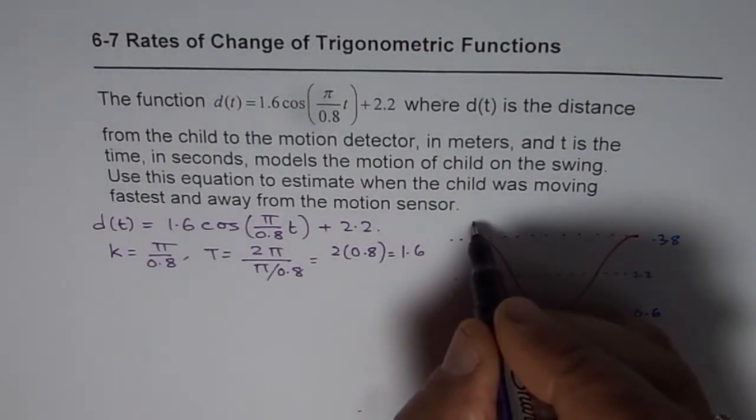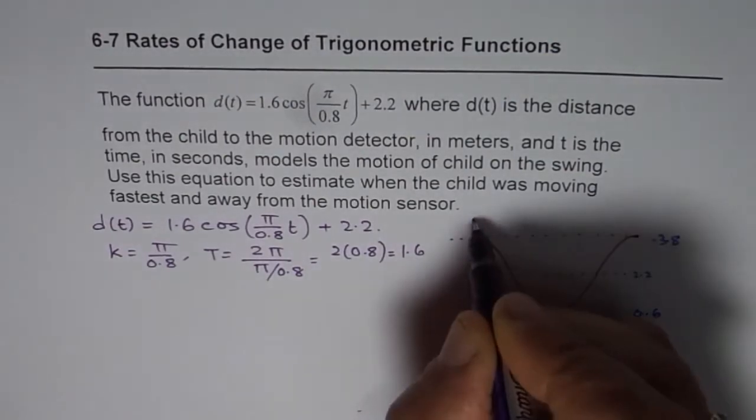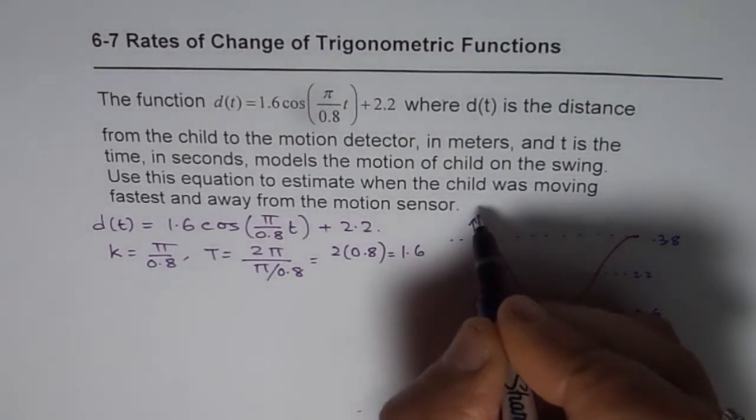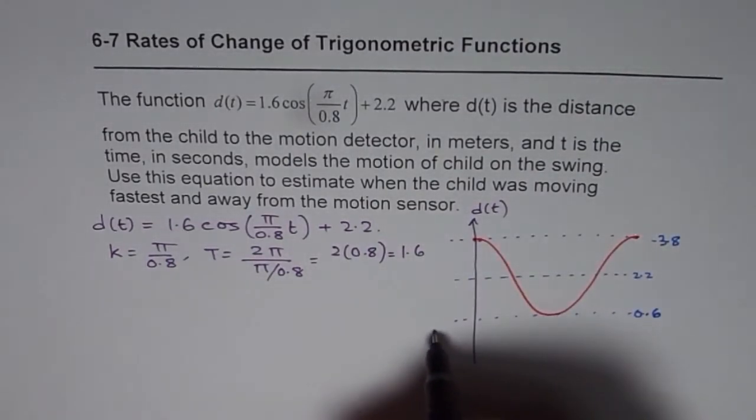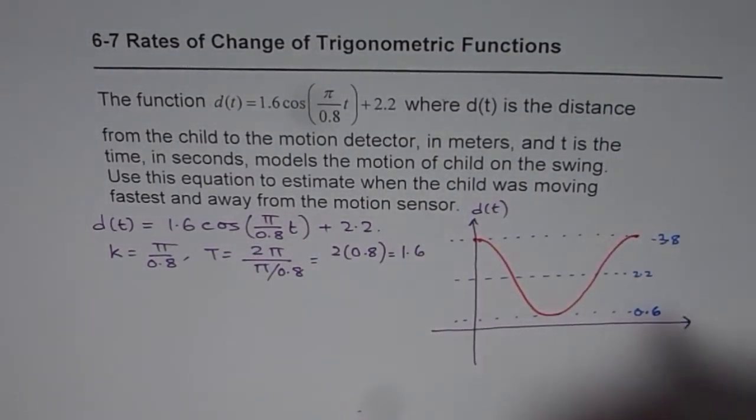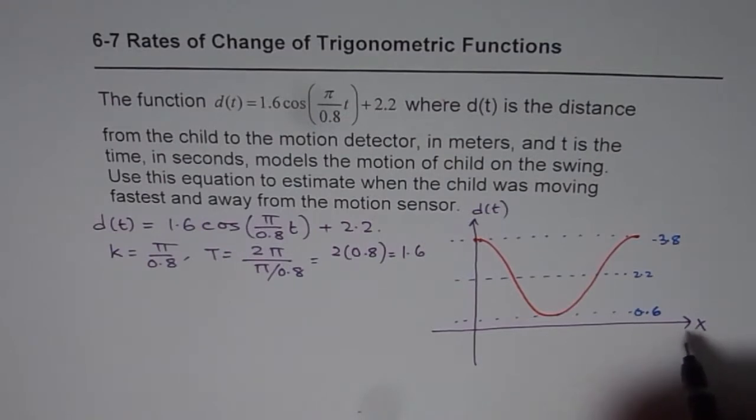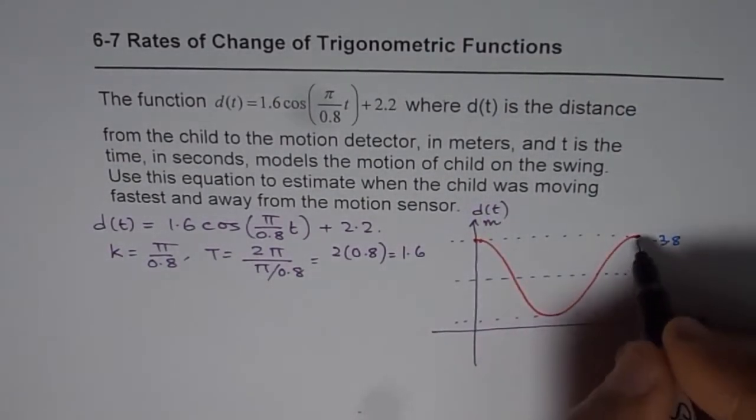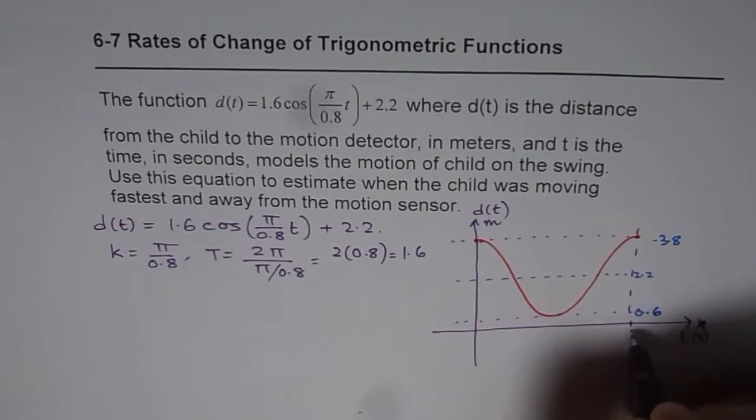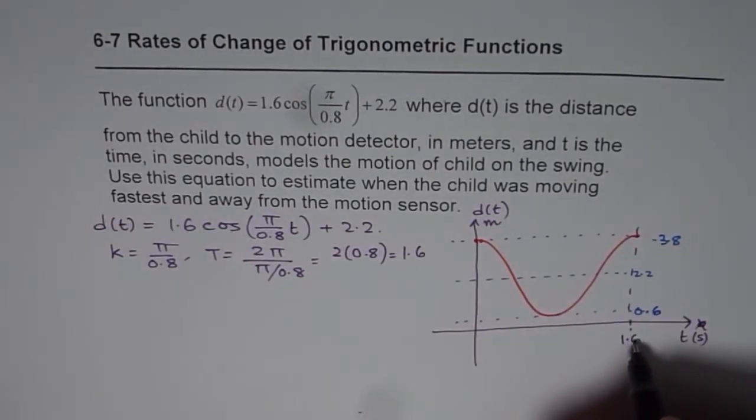So this is d(t). It's not to the scale but it's fairly accurate. This is time in seconds and d(t) is in meters. So what we have here is that one wave has a time period of 1.6.